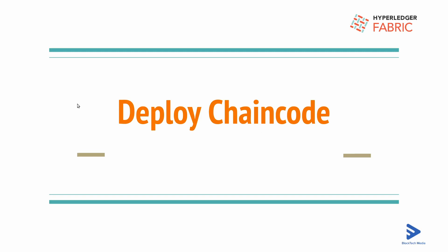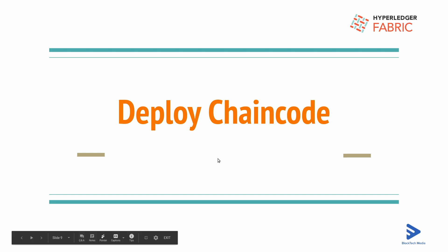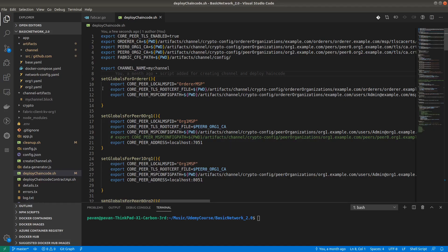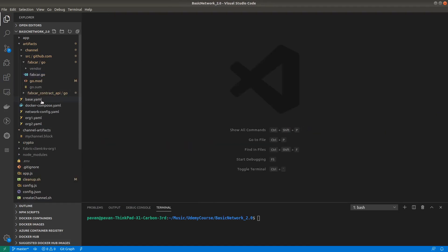Hello everyone, welcome back. In this video we are going to go through all the steps we mentioned in the previous video — the chaincode lifecycle. We mentioned 10 different steps: packaging the chaincode, installing the chaincode, querying the chaincode, approving for specific organizations, checking readiness, committing, invoking. All these steps are very important, so make sure you understand each and every step. Let's jump into VS Code.